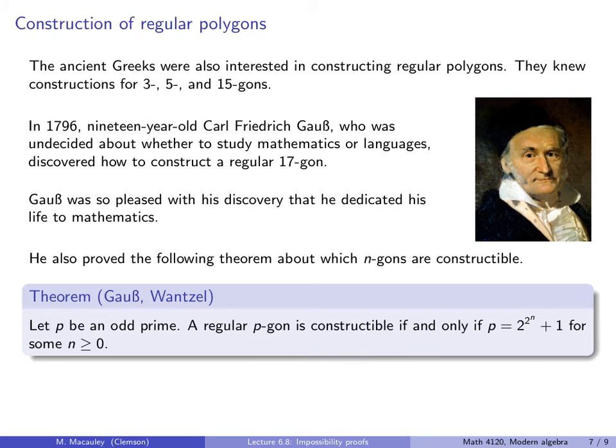Now, I should be careful, and I should say that I think Gauss actually stated this. He came up with this theorem, and it wasn't proved until Wanzel came along years later. This says that if p is an odd prime, basically not equal to 2, then a regular p-gon is constructible if and only if p is equal to 2 to the 2 to the n plus 1 for some integer n.